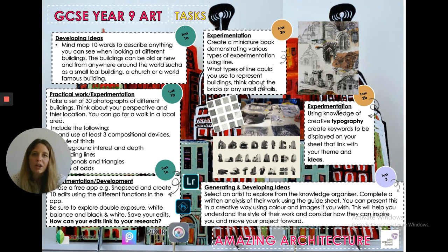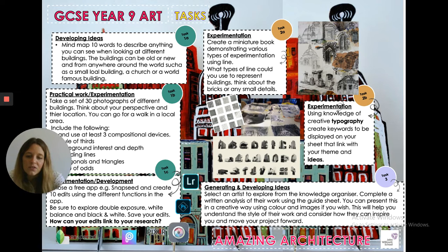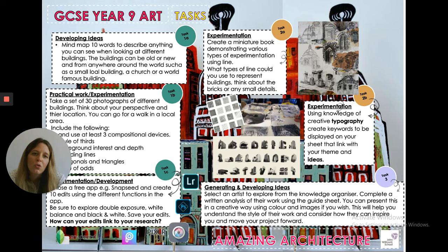The next task is to create a miniature book demonstrating various types of experimentation using line. Get some ideas together and think about what materials you'd use to record a building — perhaps a biro or pencil — and start to sketch loosely how you would record certain areas. You can draw from the photographs you've collected. Think of taking an A4 sheet, folding it to A5, then to A6, and doing small experiments at that size to get you thinking about what marks you can put on the page.